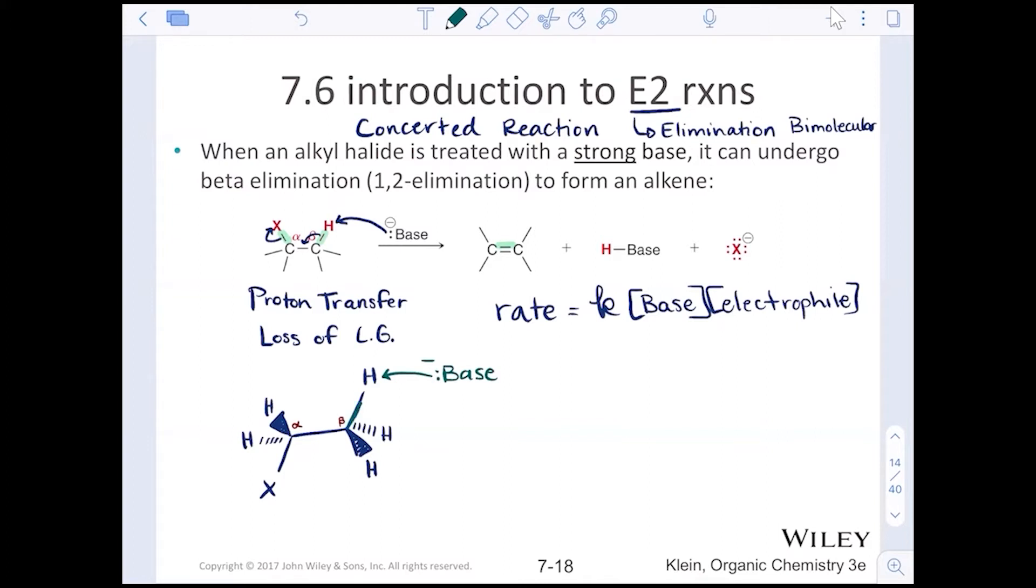And notice how I drew these. They are on opposite sides of each other. So here, just like in the backside attack where the nucleophile had to come into the electrophile on the opposite side, so too does the base need to be deprotonating the beta carbon on the opposite side of the leaving group. So as those electrons roll down to become the pi bond in between alpha and beta, the leaving group is getting kicked out in a backside attack motion. This is what we call anti-periplanar.